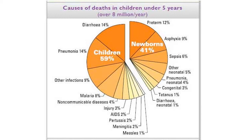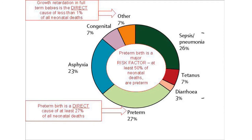More than 40 percent of deaths in children under five years occur in the neonatal period. Of neonatal deaths, 27 percent are directly attributed to prematurity. Another 25 percent may be indirectly linked — through congenital infections, malformations, or genetic reasons — meaning as much as 50 percent of neonatal deaths may be directly or indirectly attributable to premature birth.